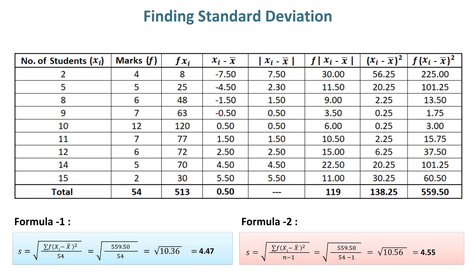Finding standard deviation. The numerator value for finding standard deviation is 559.50 and the denominator value is 54. Thus, the standard deviation in Formula 1 is 4.47. When we subtract 1 from the sample size in Formula 2, then the value of standard deviation becomes a little higher compared to Formula 1, which is 4.55.